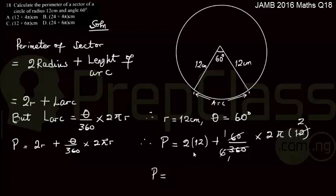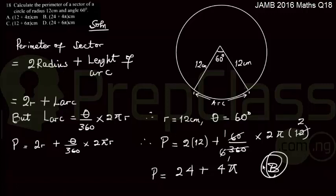The perimeter will now become 2 times 12, that's 24, plus 2π times 2, that will give me 4π. Looking at the options, do I have an option like 24 plus 4π? Yes, I do. That is the same as option B. So the correct answer to the question is option B.